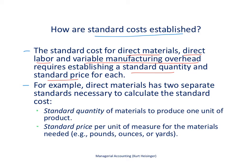The first one we'll talk about is direct materials, which has two separate standards we have to create. Those two standards are the standard quantity — the number of materials we expect to need to produce one unit of product — and the standard price per unit of measure for those materials. We're going to use an example of a company that produces ice cream, measuring materials in pounds. So there are two pieces to the standard cost per unit for direct materials: standard quantity and standard price.